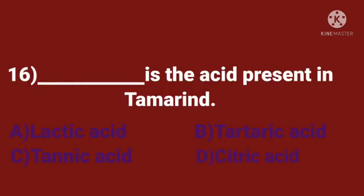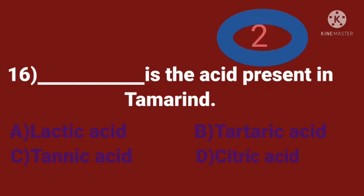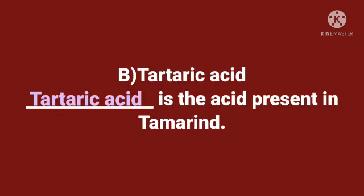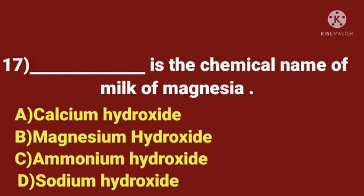Sixteenth question. Dash is the acid present in turmeric. A. Lactic acid. B. Tartaric acid. C. Tannic acid. D. Citric acid. Time starts now. The answer is tartaric acid. Tartaric acid is present in turmeric.